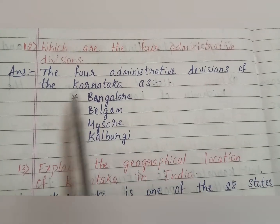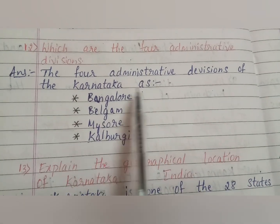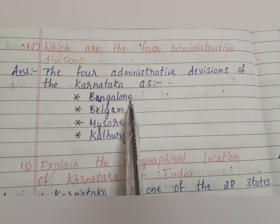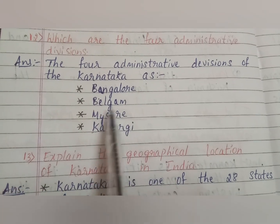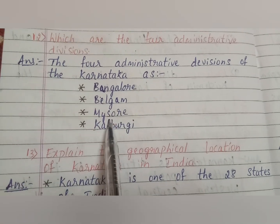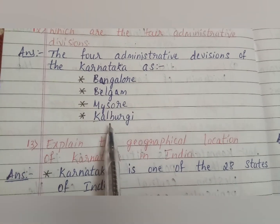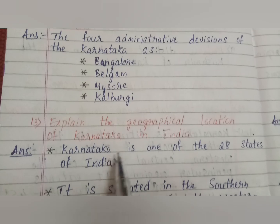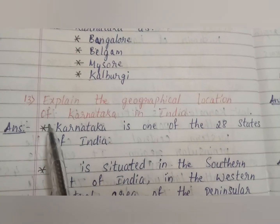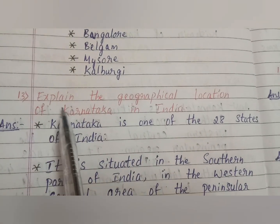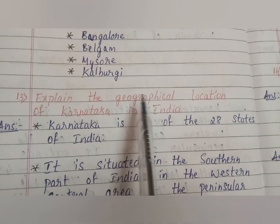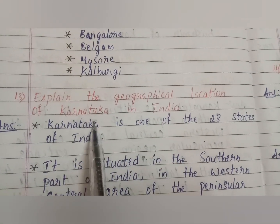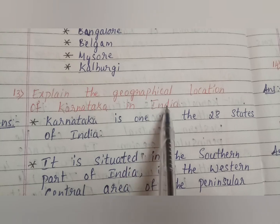Next question: which are the four administrative divisions? Answer: the four administrative divisions of Karnataka are Bangalore, Belgam, Mysore, and Kalaburgi. Next question: explain the geographical location of Karnataka in India.